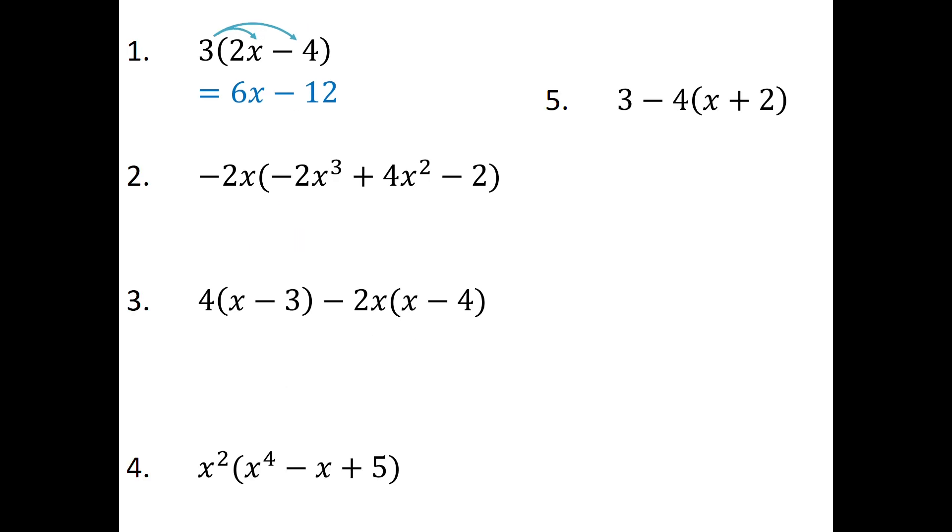Alright, so let's start marking. All of these you need to distribute. So I'm saying negative 2 times negative 2 is positive 4. x times x cubed will give me x to the power of 4. Same thing for the next term, negative 2 times positive 4 is negative 8. x times x squared will give me x cubed. And then the last one, negative 2 times negative 2 is positive 4, and then I just bring that x down. No like terms, so I leave it as it is.